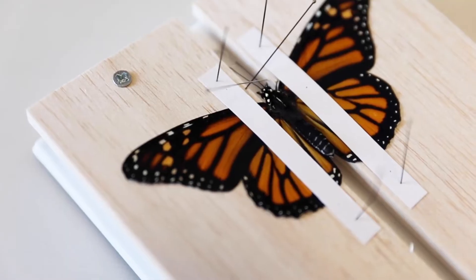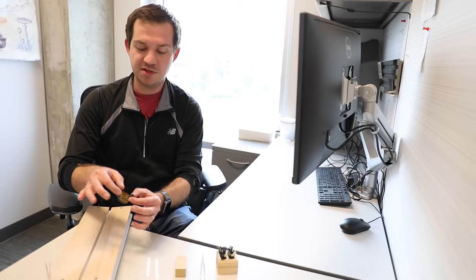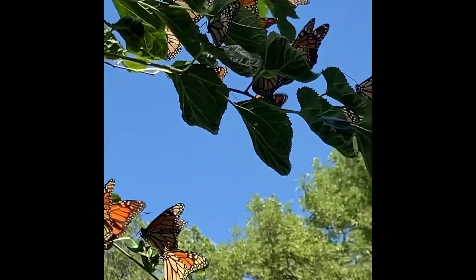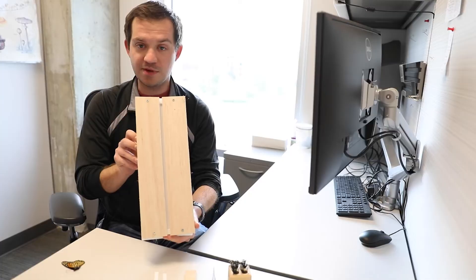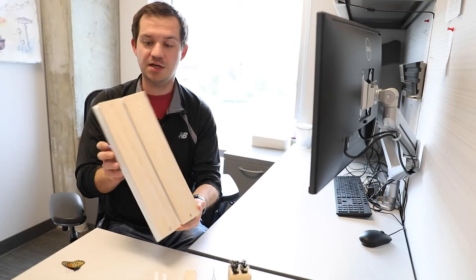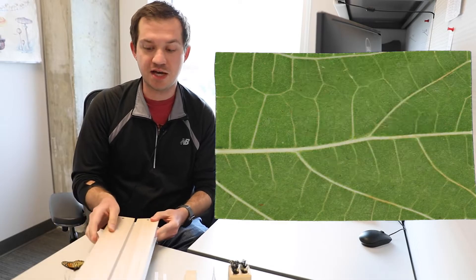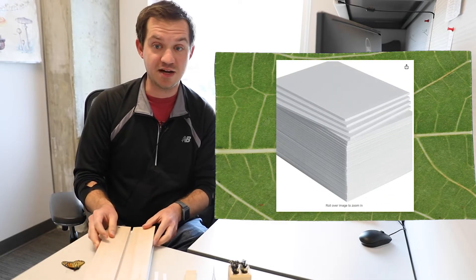We have a nice fresh monarch specimen that unfortunately was not able to make its migration down to Mexico this year, and we're just going to spread this on a pretty standard spreading board. There are many different types of spreading boards available - you can make makeshift ones out of insulation foam sheets that you can buy at a hardware store.